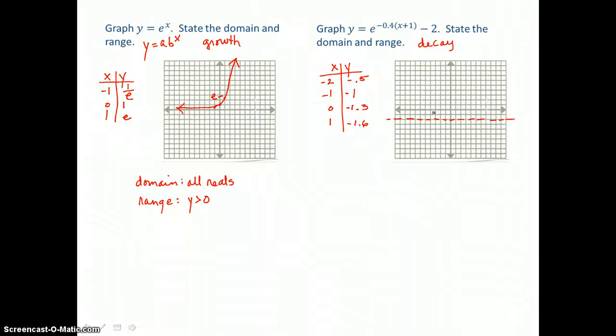So now I'll graph those ordered pairs. Negative 2, negative .5, negative 1, negative 1, 0, negative .3, and 1, negative .6. You can see that we're falling. This is exponential decay. We're falling towards that asymptote and taking a turn, then following the asymptote y equals negative 2 to the right. Domain is all real numbers, and the range are y values greater than negative 2.